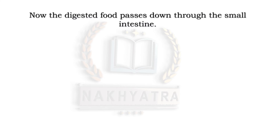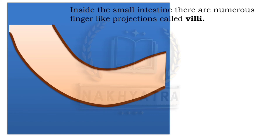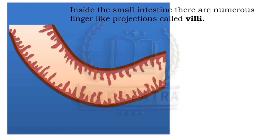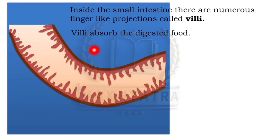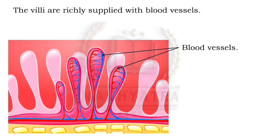The digested food passes down through the small intestine. Inside the small intestine there are numerous finger-like projections called villi. These villi, present on the lining of the small intestine, absorb the digested food and are richly supplied with blood vessels.